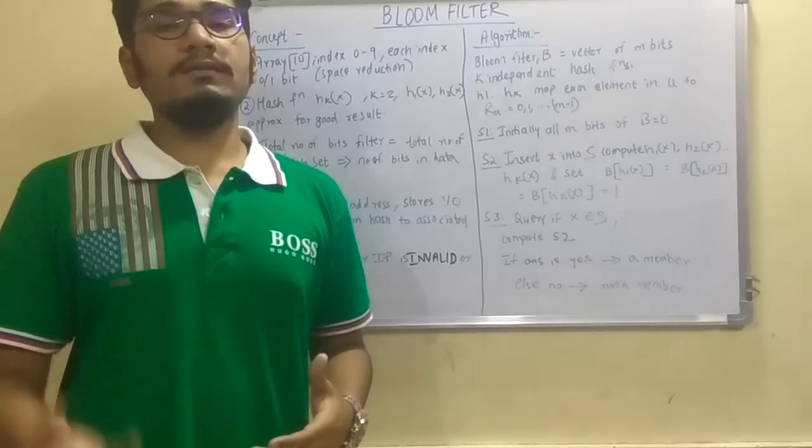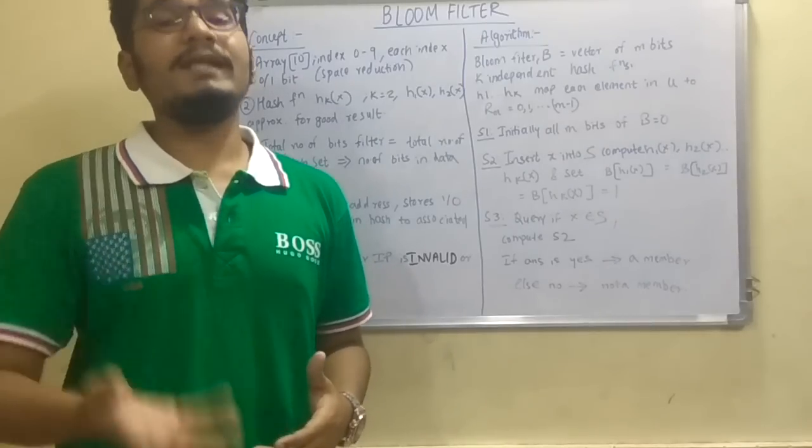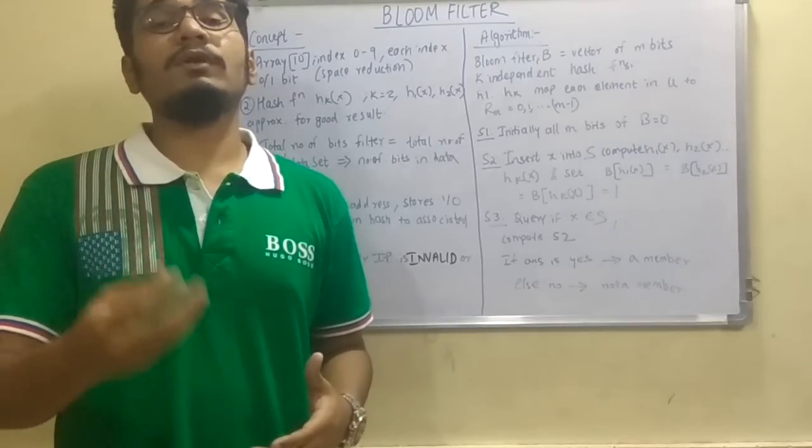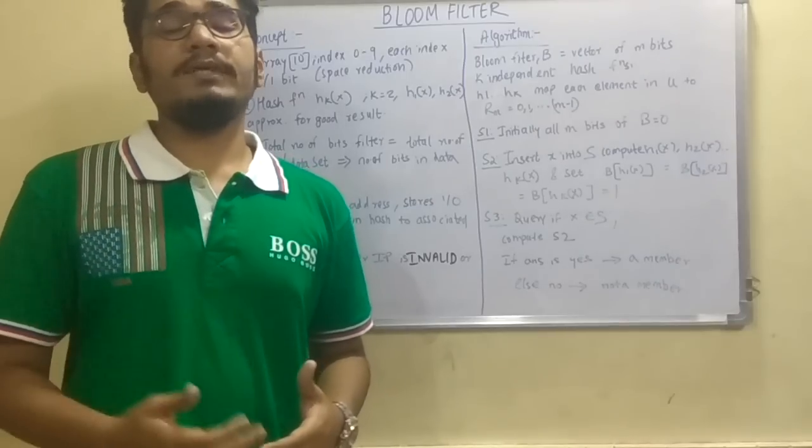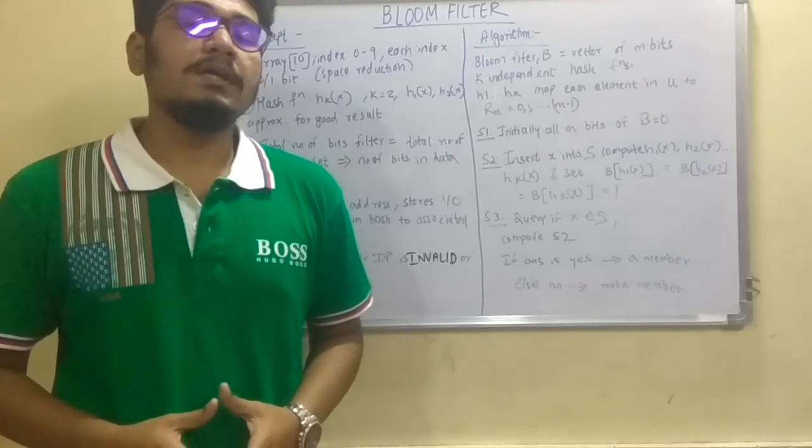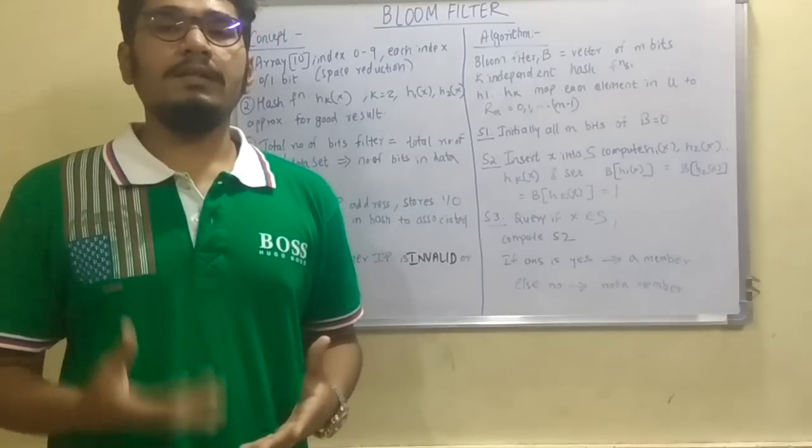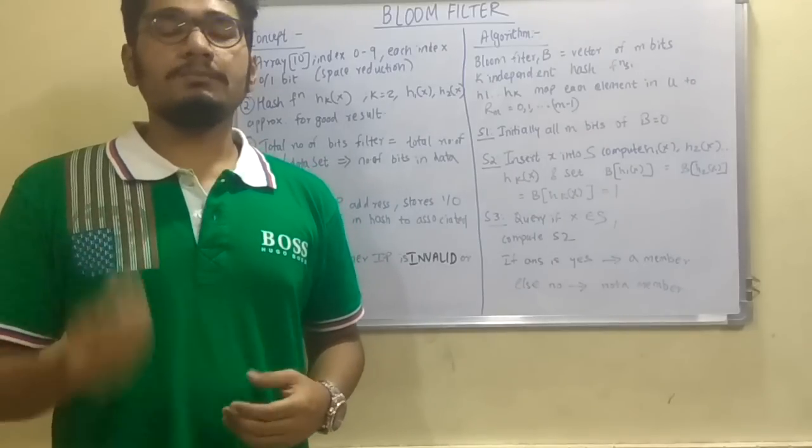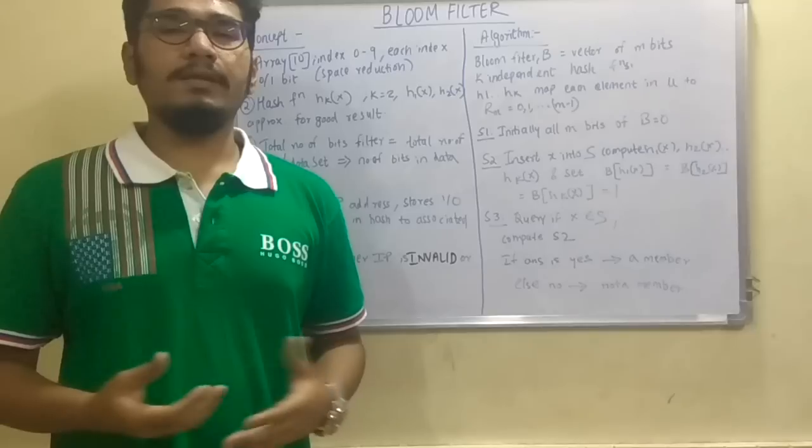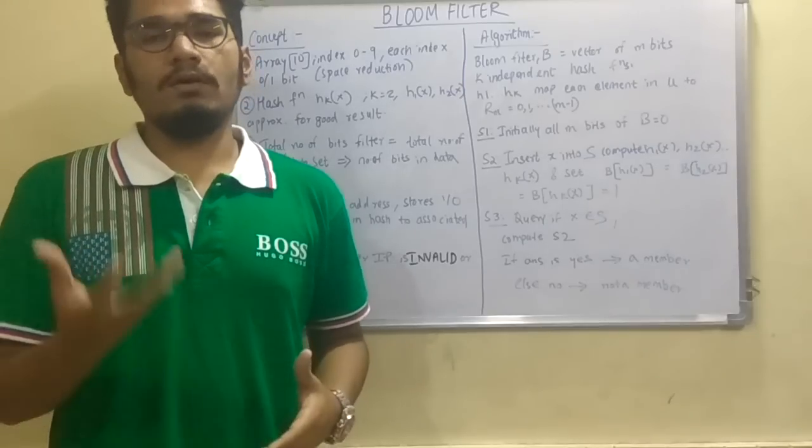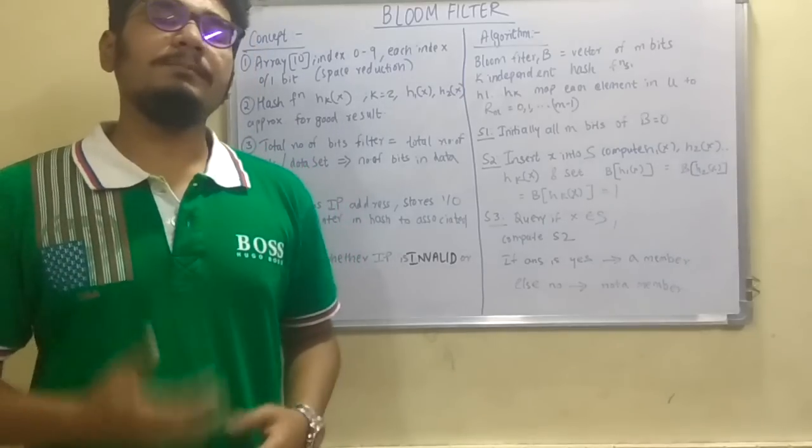And so if redundancies are created, means like valid IP address is there but it's there for second time or third time or it is repeated for n number of times, then that will create a false positive in the filter. But smaller false positives are negotiated and it is not considered or ignored. So this is the bloom filter algorithm in detail.